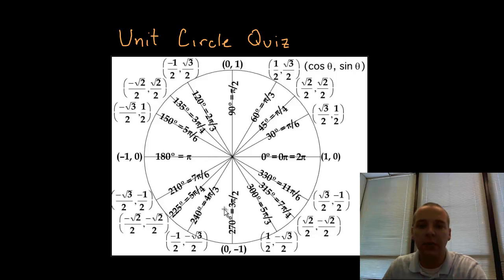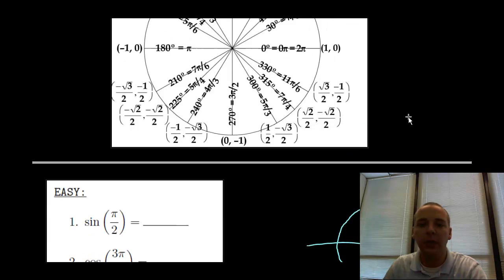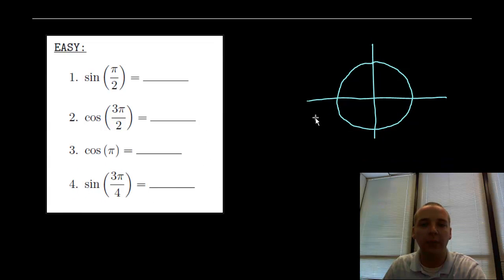Here's the unit circle, the completed unit circle. Every radian angle has an XY point. When somebody asks for the cosine of an angle, they're referring to the X coordinate of the point. Or if they ask for the sine of an angle, they're really asking for the Y coordinate. I'm not going to go through all those details as to why. In this video we're just going to start practicing some problems. We broke the quiz into easy, medium, and hard problems. Let's start with the easy ones.